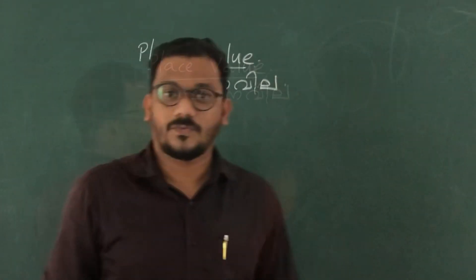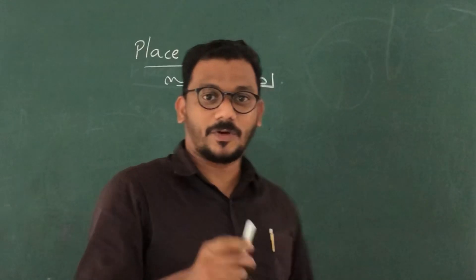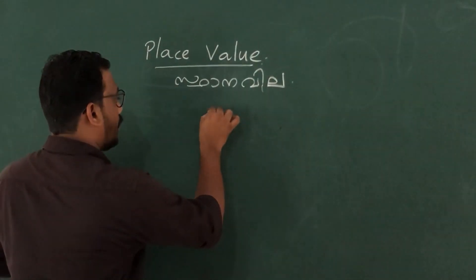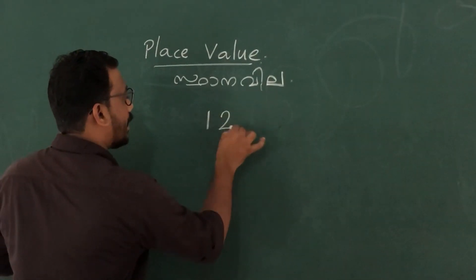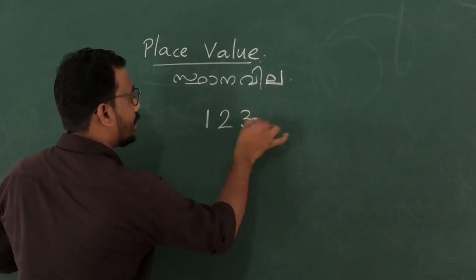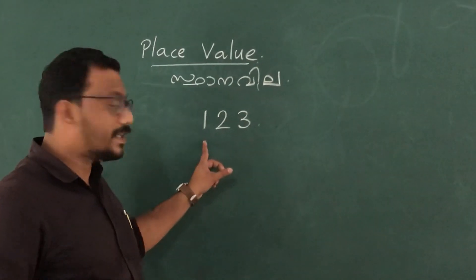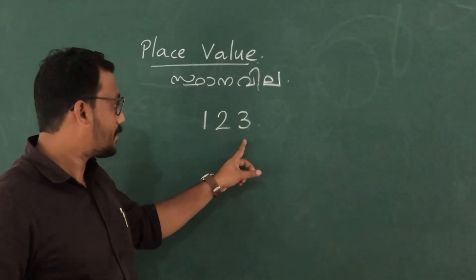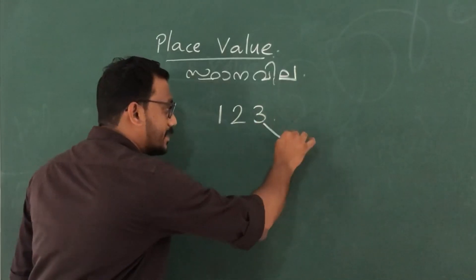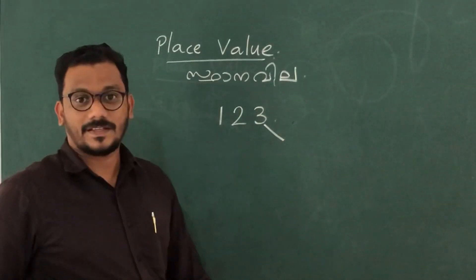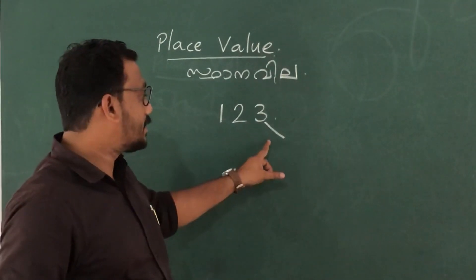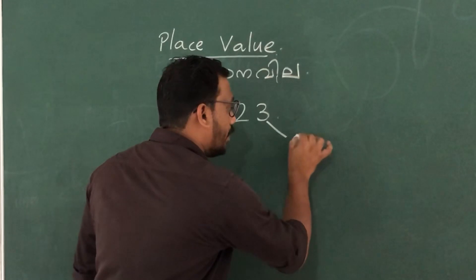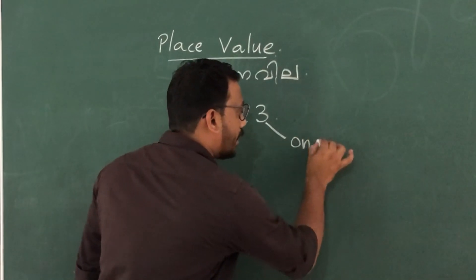For example, I am going to write a three-digit number — one hundred twenty-three. Here, the number three is in the place value of ones.